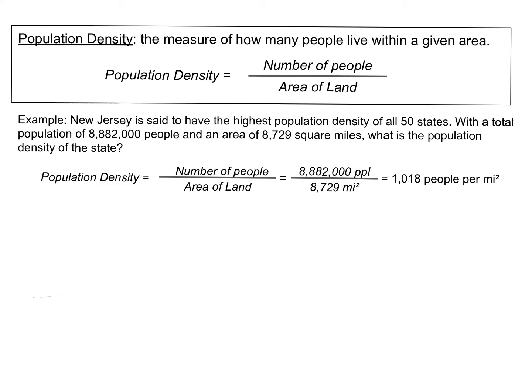Hey, math enthusiast. I'm here to finish up the notes on density. In this video, we're going to define population density. It's defined as the measure of how many people live within a given area. My formula to calculate population density, similar to my formula to calculate density, is a ratio that compares the number of people to the area of land.